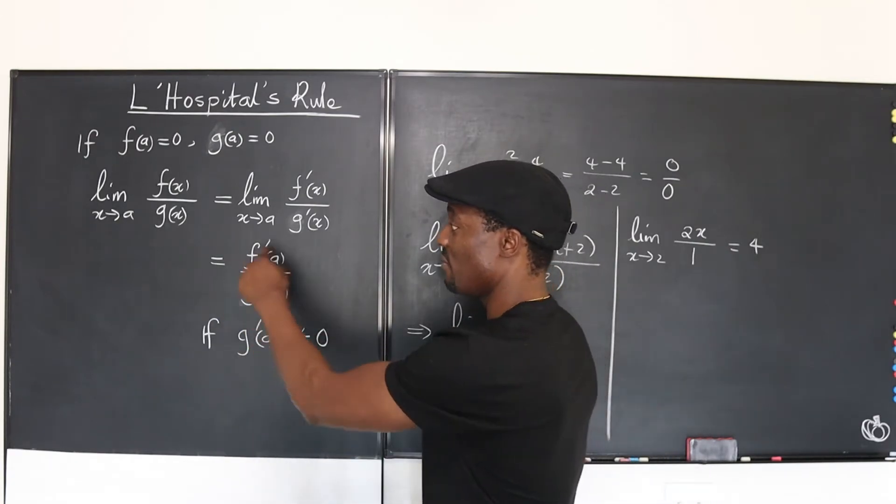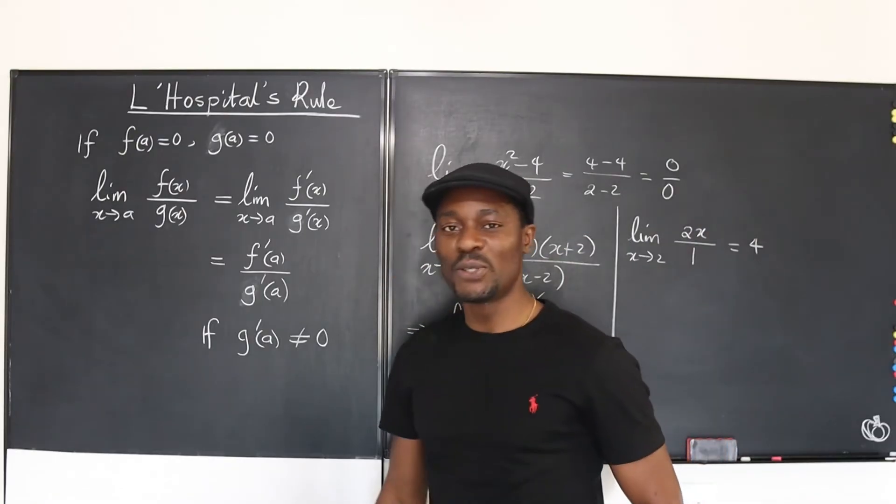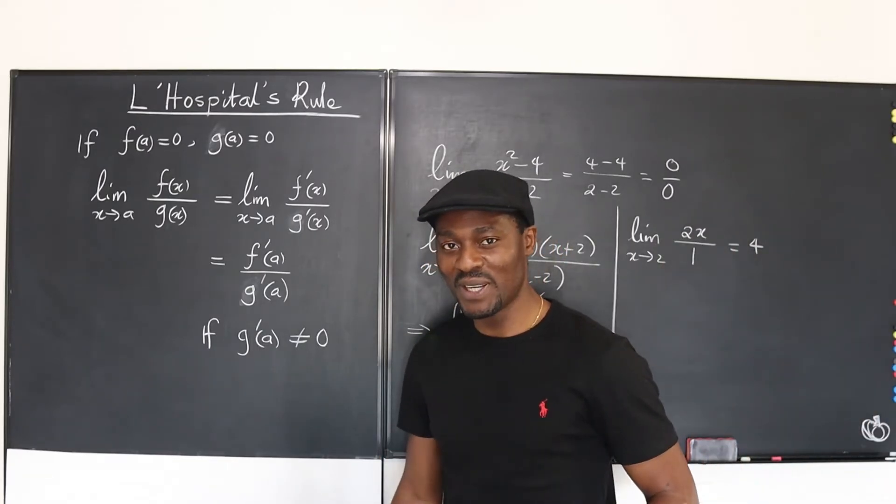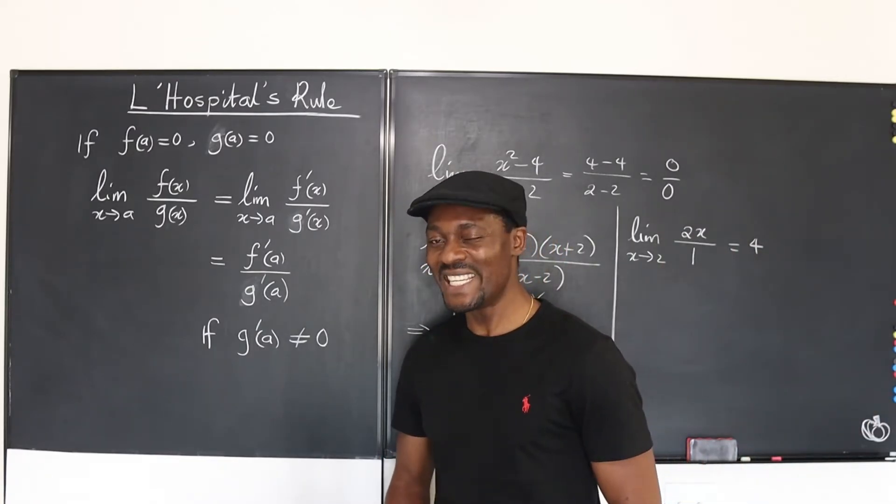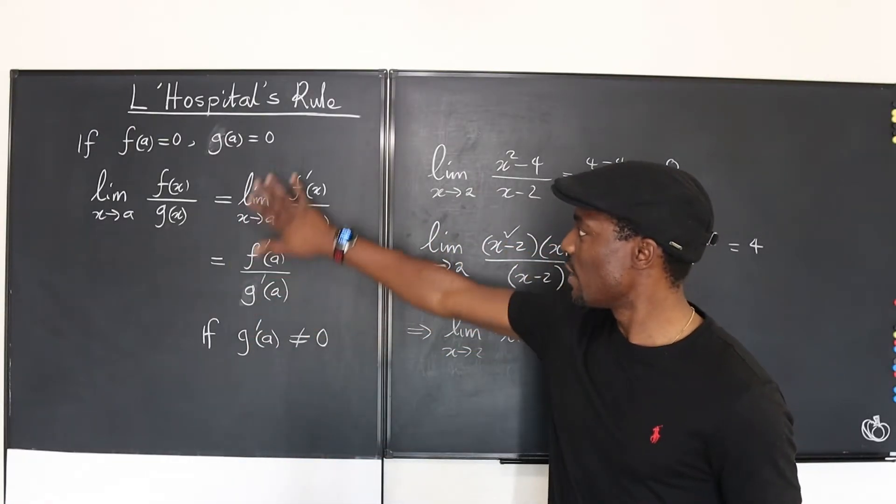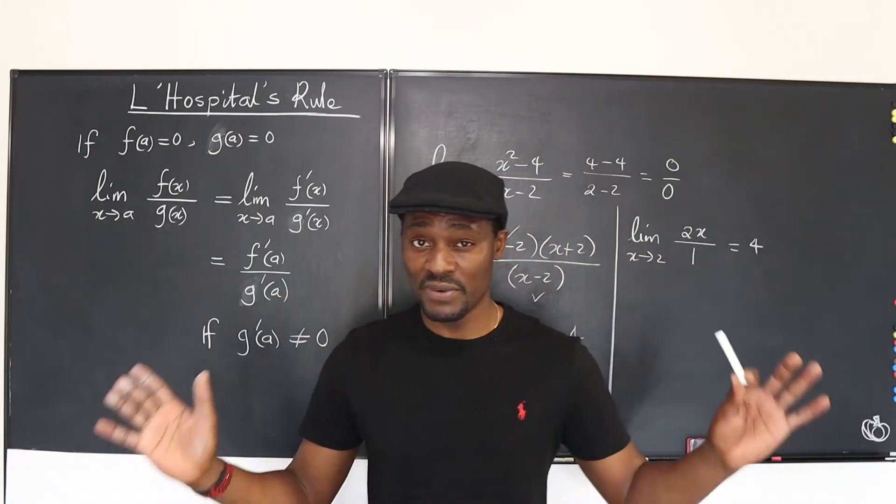Now, if when you plug it in, you still get 0 over 0, use L'Hôpital's rule again. If you still get 0 over 0, use L'Hôpital's rule again until there's no more need for you to use L'Hôpital's rule. So basically that's what L'Hôpital's rule is all about. And I just want to show you a simplified proof of it.